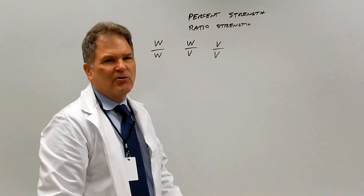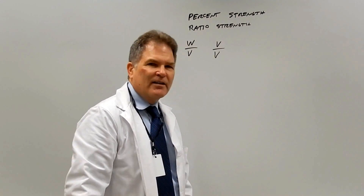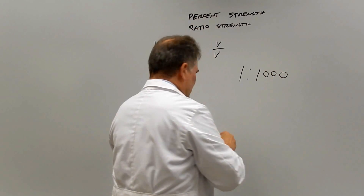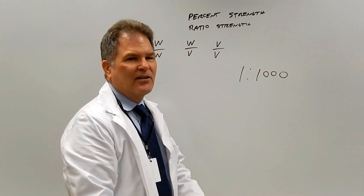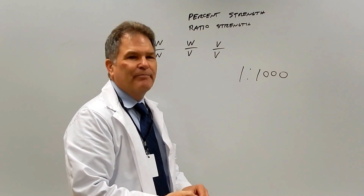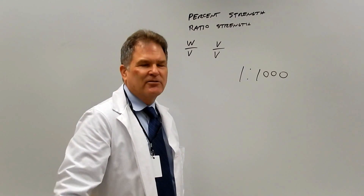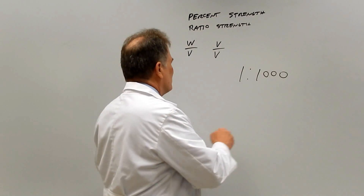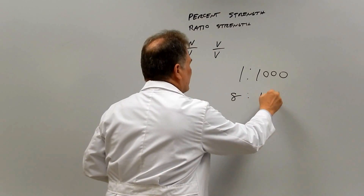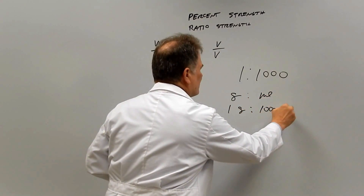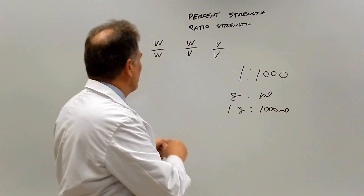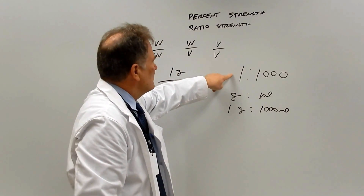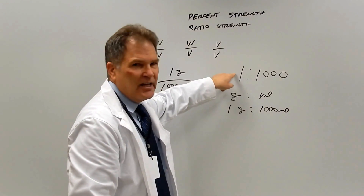Some drugs are written with a ratio strength. The main example is epinephrine, expressed as a one-to-one-thousand solution. Since ratio strength drugs are typically weight-volume, the first number is always grams and the second is always mL — so one to one thousand means one gram per one thousand mL. Write it as a fraction: one gram over one thousand mL. That's your first step, because the colon notation doesn't fit into our calculation system.